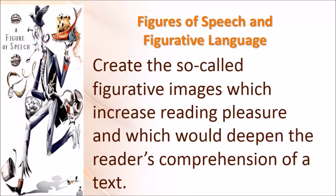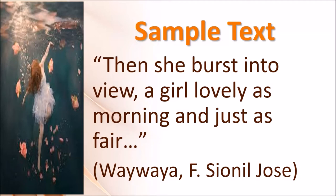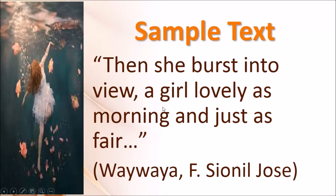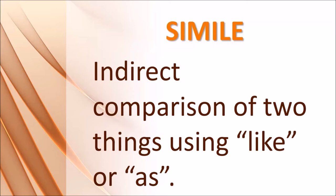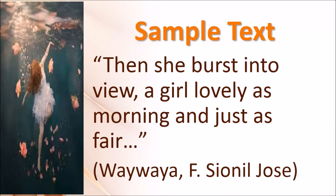Let us read and discuss a sample text from 'Waiwaya' by F. Sionil José: 'Then she burst into view, a girl lovely as morning and just as fair.' Notice how the girl's loveliness is compared to the morning — 'lovely as morning and just as fair.' This is an example of simile, which is an indirect comparison of two things using 'like' or 'as,' and we can see here it has the word 'as.'